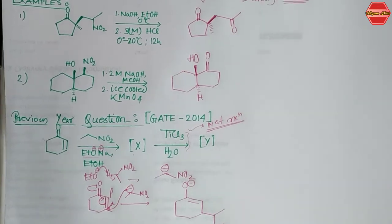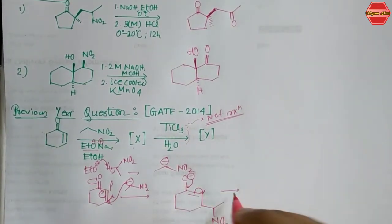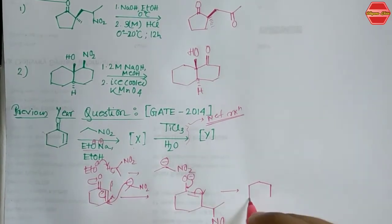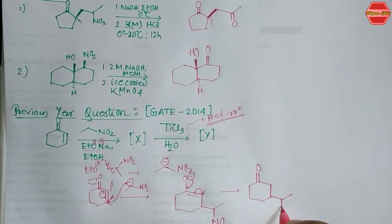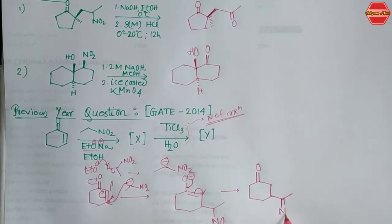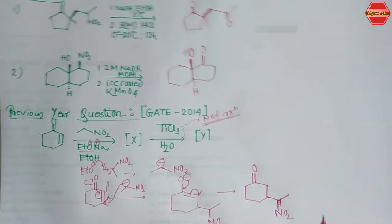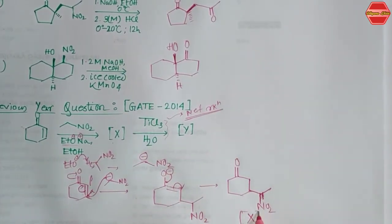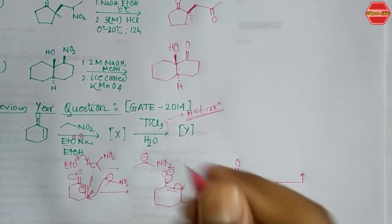The carbanion attacks at the beta position of the alpha-beta unsaturated ketone, then takes a proton from ethanol to give the major product X, which contains the NO₂ group.